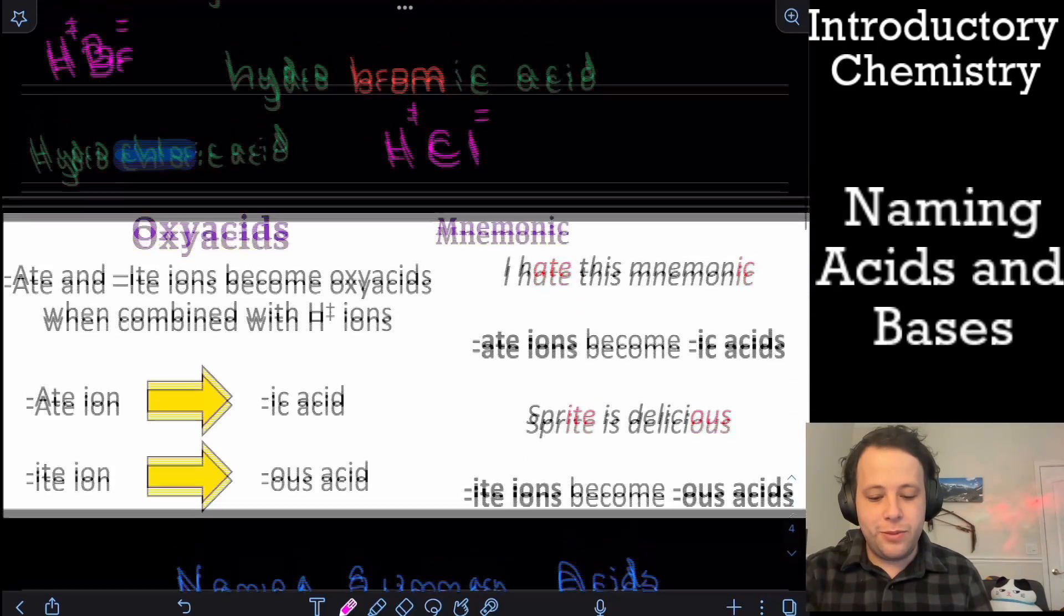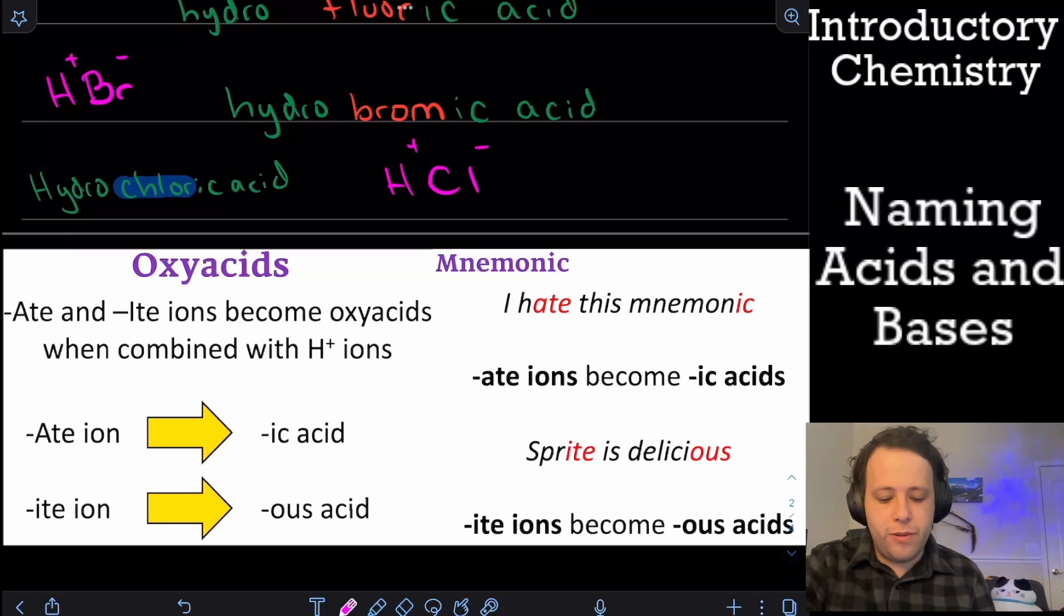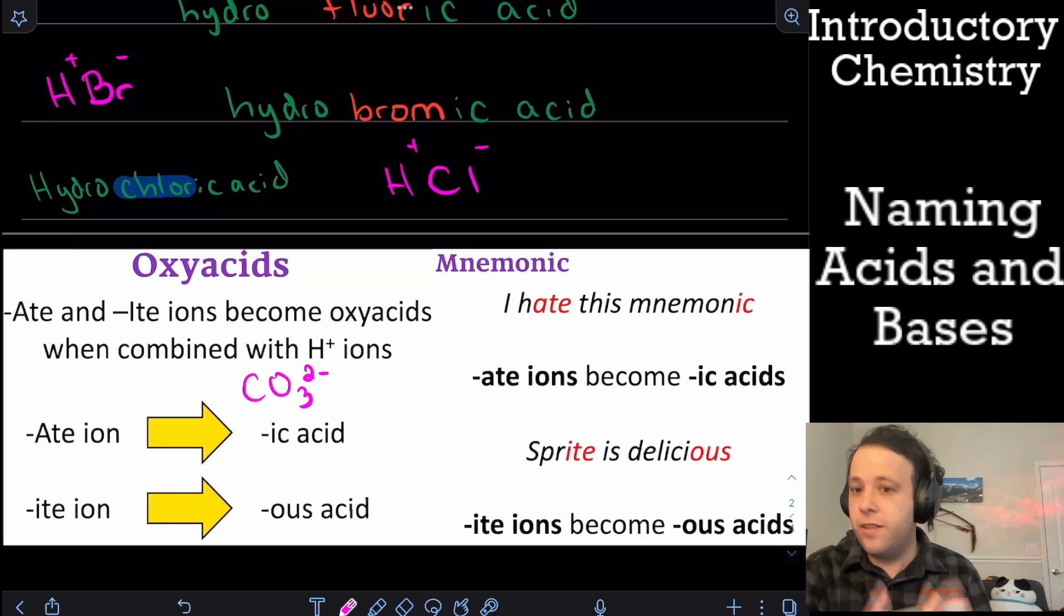Now what other types of things we might have? We also have oxyacids. So an oxyacid is any of the different polyatomics. So if I have, for example, CO3 2-, this is carbonate. Carbonate is one of our polyatomics. So if we ever see anything with the ate or ate ending, they can also combine with different acids.